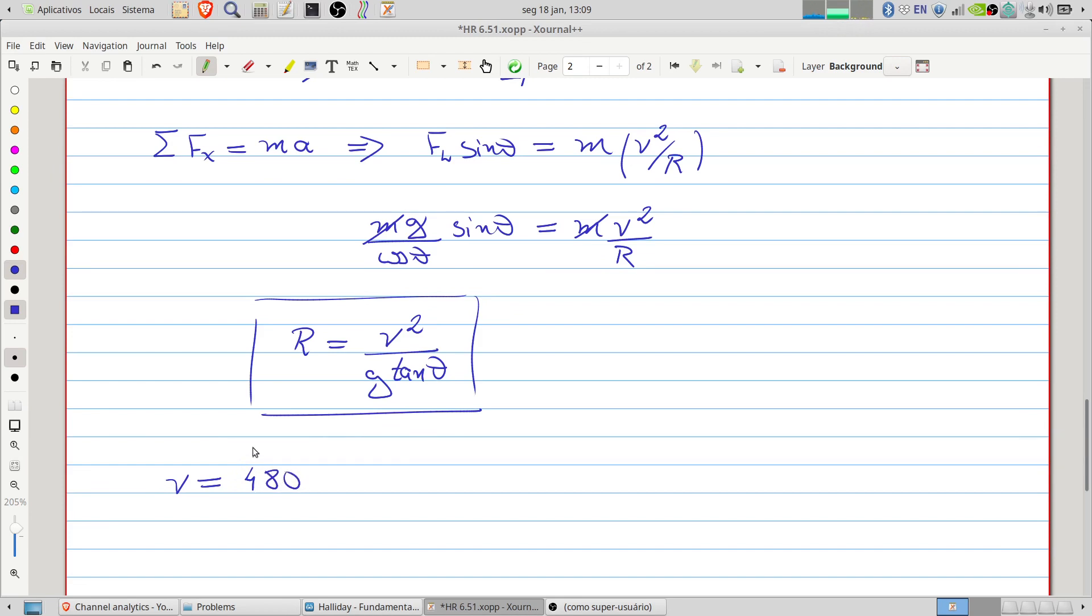So we have 408 kilometers per hour. Each kilometer is 1000 meters. Each hour is 3600 seconds. So we have the velocity or the speed in meters per second.